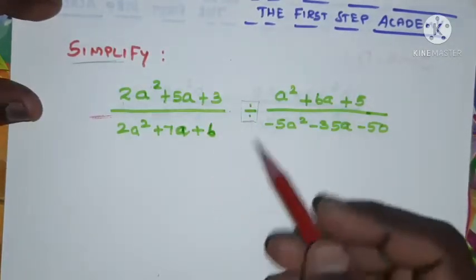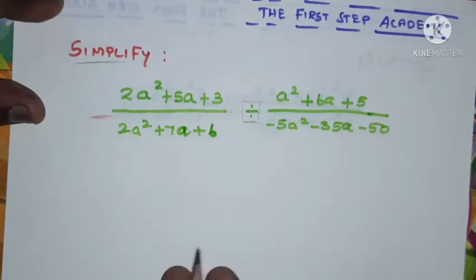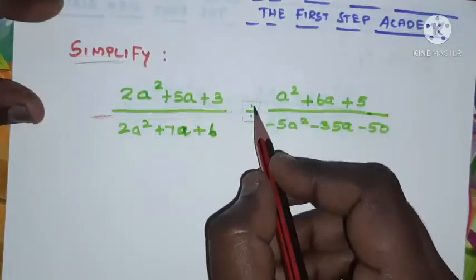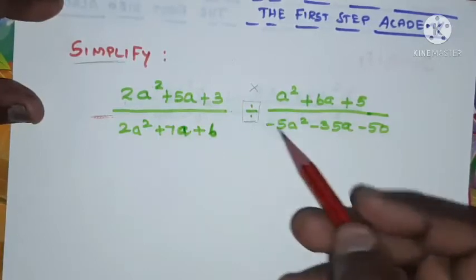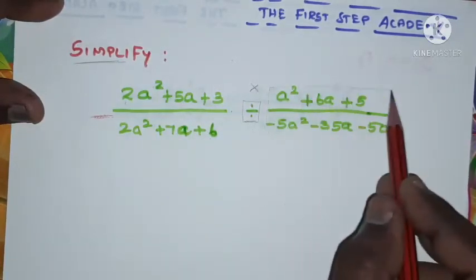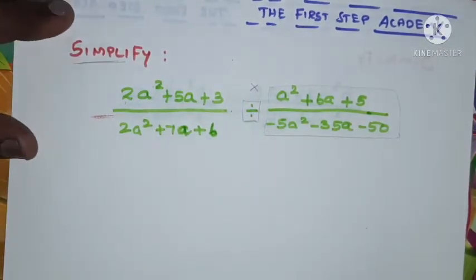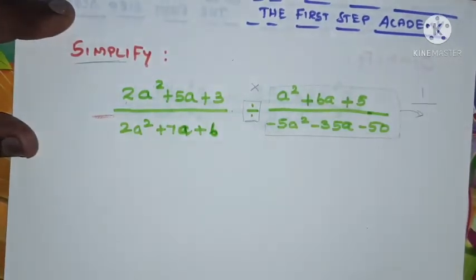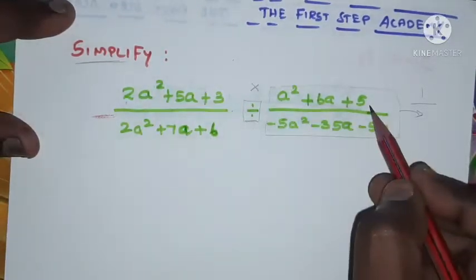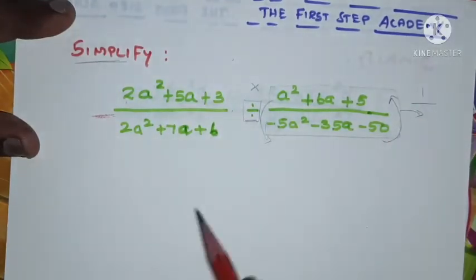So far we have seen only multiplication; now we are seeing division. I'm not going to divide directly — I'm going to change the operation from division to multiplication. When I change the operation, then automatically this term will become a reciprocal. Reciprocal means one divided by the particular term, so the numerator will become the denominator and the denominator will become the numerator.